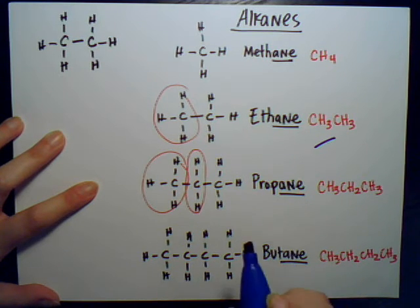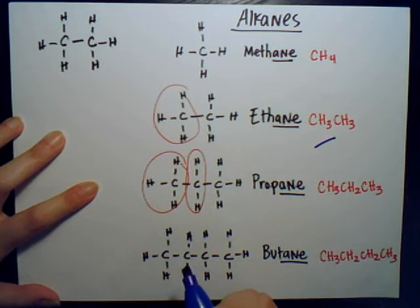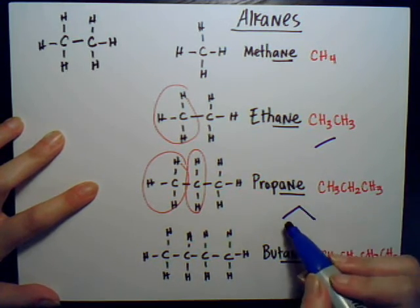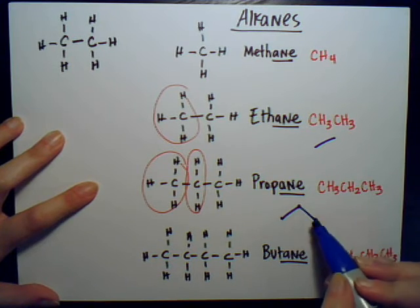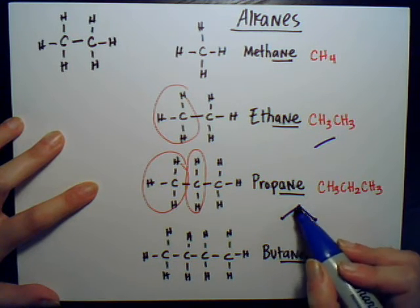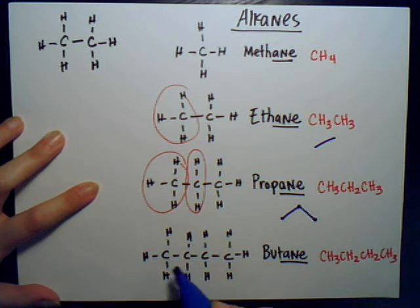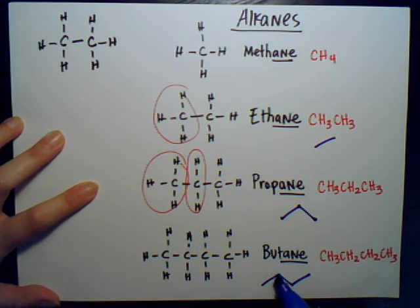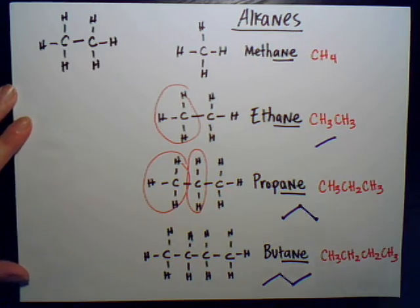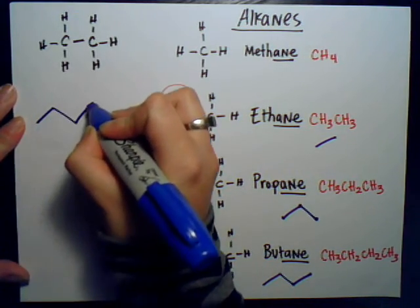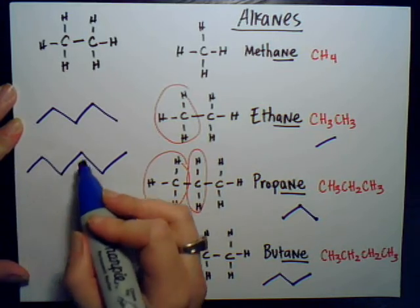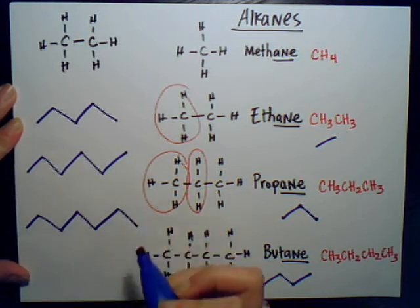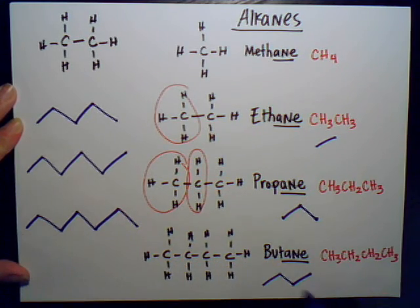For propane, there are three carbons, so the line structure has three points like a bent line. You count the endpoints and vertices — not the bonds themselves. Butane has four carbons, pentane five, hexane six, and heptane seven, each adding another point to the zigzag line structure.